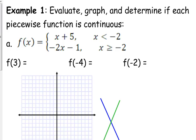So if we are asked what is f of 3, you might think you have two choices. But you don't plug into both of them — you've got to figure out which piece applies. Is 3 less than negative 2, or is it greater than negative 2? It is greater than negative 2, so we're going to plug it into the second one. Negative 2 times 3 minus 1 is negative 6 minus 1, which is negative 7.